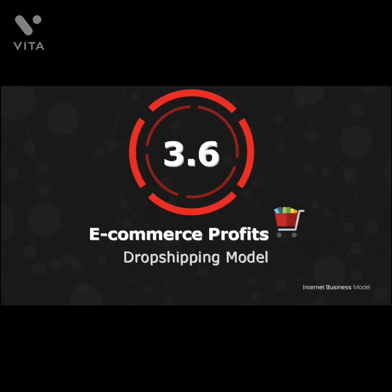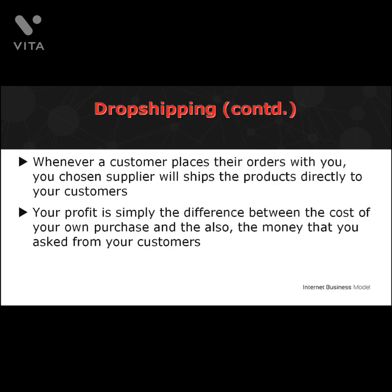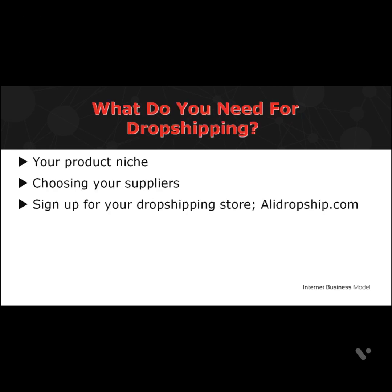The final e-commerce business type is dropshipping. Unlike POD, running a dropshipping business means you sell products that you don't own to your customers. When you receive orders, your chosen supplier ships the product directly to your customers. Your profits are simply the difference between the cost of your own purchase and the money you asked from your customers. All you need is: one, product niches; two, choosing your supplier — prepare a list of your chosen suppliers; three, sign up for your dropshipping store using one of the most popular dropship hubs, OliDropship.com.